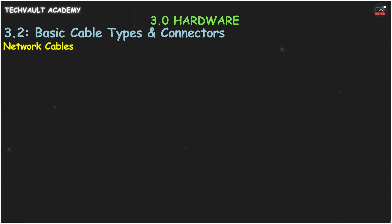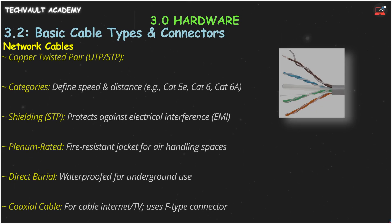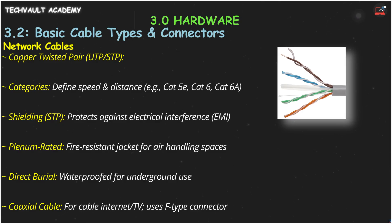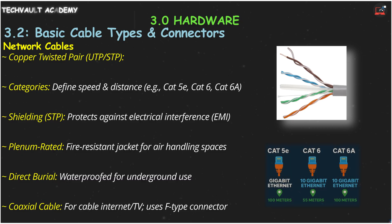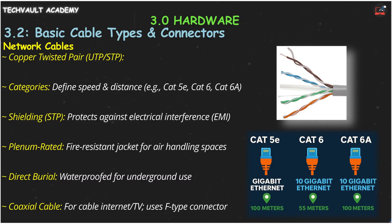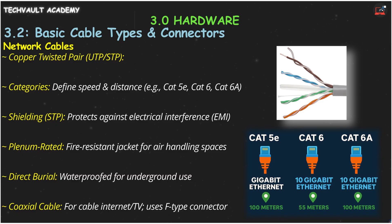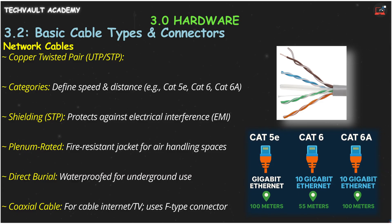First up, network cables. The most common are copper twisted pair cables, the backbone of most wired Ethernet networks. The wires inside are twisted to reduce interference. Different categories define their speed limits: CAT5e supports gigabit Ethernet up to 100 meters. For 10 gigabit Ethernet, you'll need CAT6, good for 55 meters, or CAT6a, good for the full 100 meters. These cables can be unshielded (UTP) or shielded (STP). Shielding is like adding armor to protect against electrical interference.